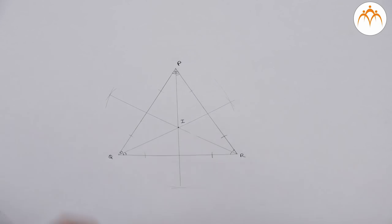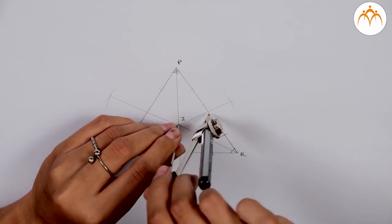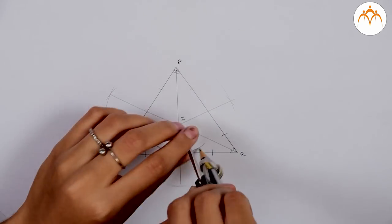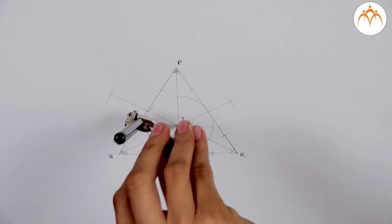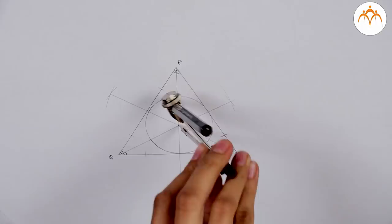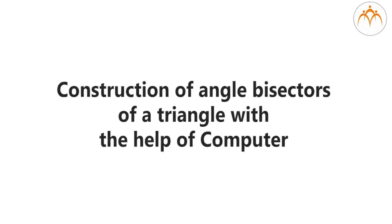Fix the distance IA and draw a circle keeping I as its center with the help of a compass. The circle touches all three sides of the triangle; it is referred to as the incircle. Such constructions hold a significant place in the field of art and design.